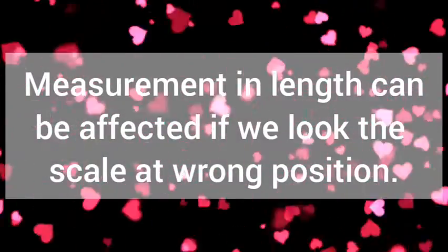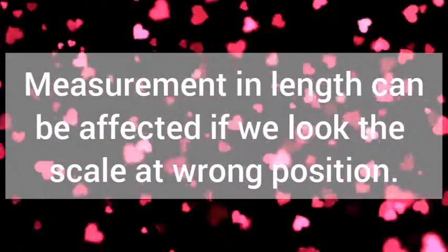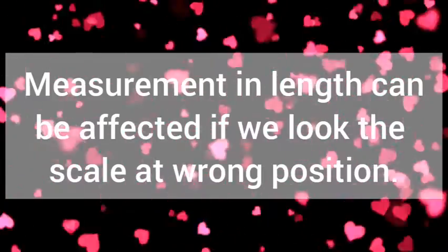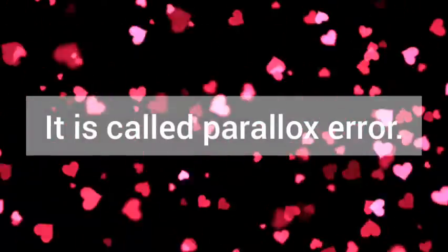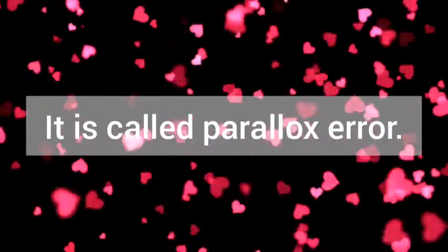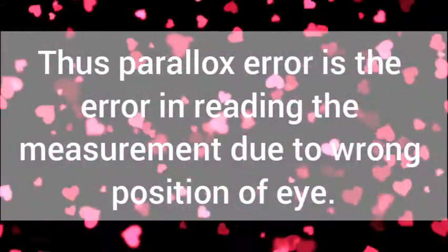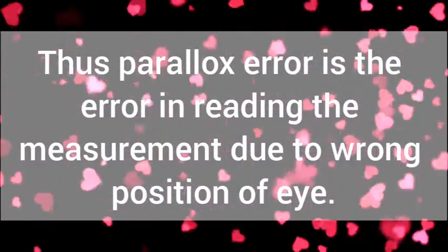Measurement in length can be affected if we look at the scale at wrong position. Because different position causes the defect in reading. It is called parallax error. So, if we define parallax error, it is the error in reading the measurement due to wrong position of eye.